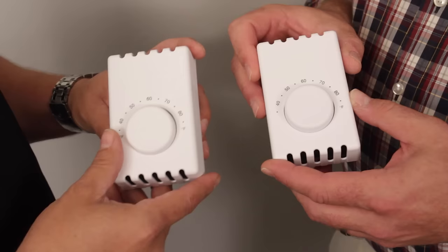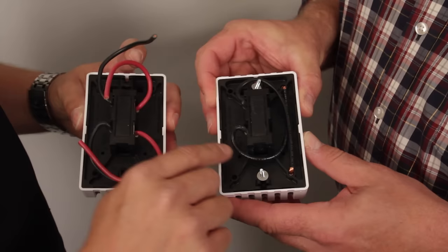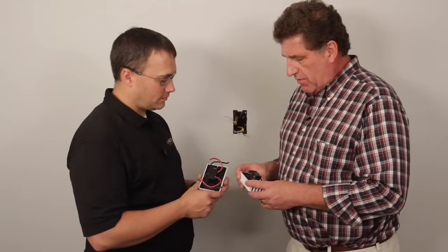So there's really a difference when you flip them over and look at the wires, huh? Yep, the single pole thermostat only has the two wires, the double pole has four wires.